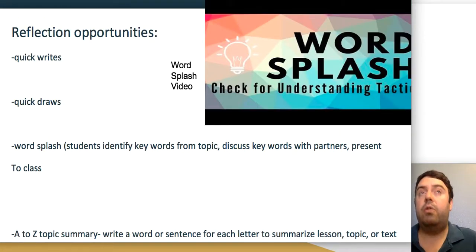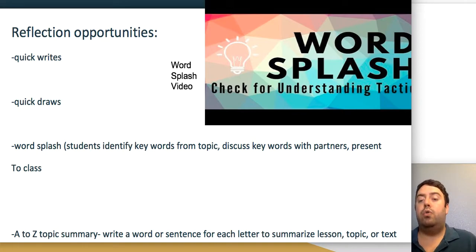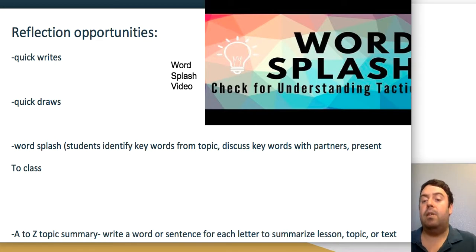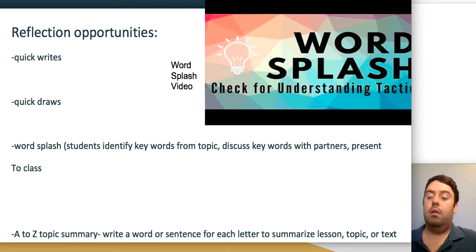Other collaborative reflection opportunities include quick writes or summaries with a partner about what students learned. For younger students or those struggling with academic language, quick draws—drawing rather than writing—can explain what they learned. A word splash has partners brainstorm key words and create a visual, rap, or song using those words to aid memory. An A-to-Z topic summary challenges students to think of a fact about the topic for every letter of the alphabet—a creative and fun way to summarize.